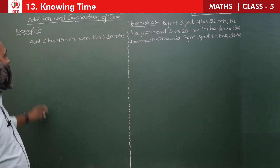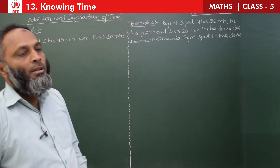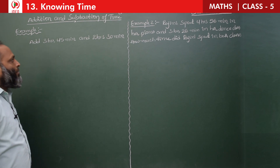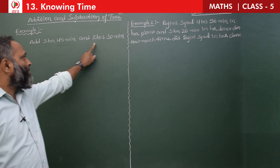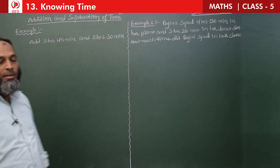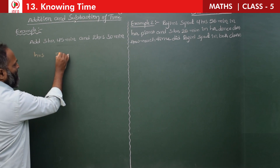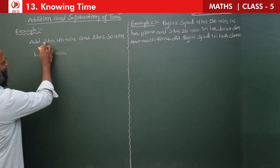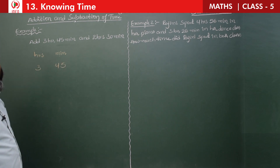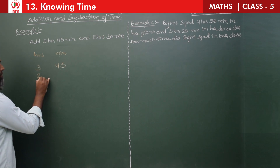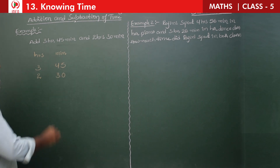Now, students, the next concept: addition and subtraction of time. In the first example, add 3 hours 45 minutes and 2 hours 30 minutes. First, we should write hours in the hours column and minutes in the minutes column: 3 hours 45 minutes and 2 hours 30 minutes. Then add both.